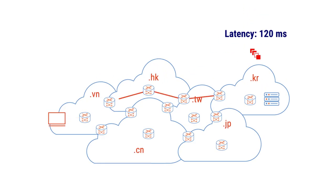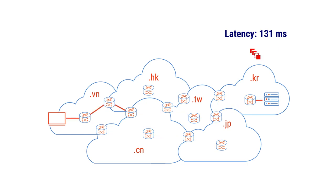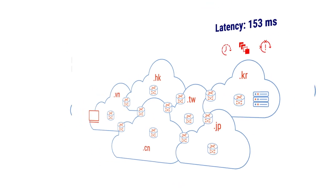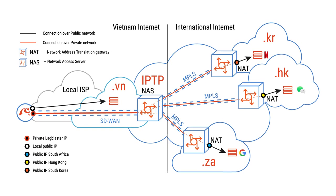Due to the nature of the internet and BGP, multiple paths to a specific prefix exist, resulting in daily asymmetric routing, which can lead to suboptimal routing and increased latency. With the destination country's IP address, traffic from Lag Blaster uses the domestic internet of that country to reach the desired location. The reverse path from the destination to IPTP's gateway also uses the domestic internet of that country, ensuring symmetric routing and greatly helping optimize the path for Lag Blaster users.